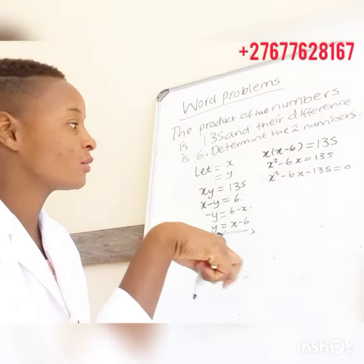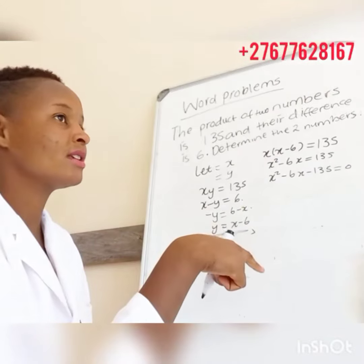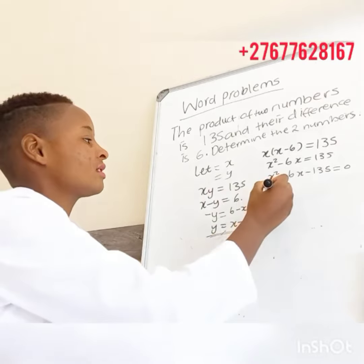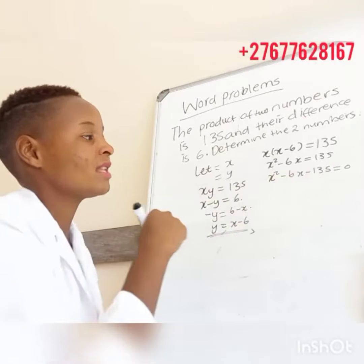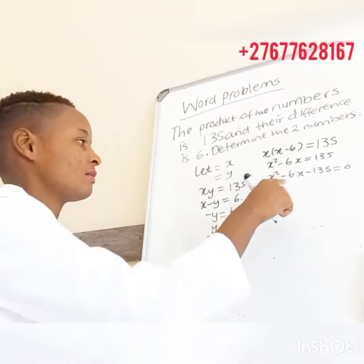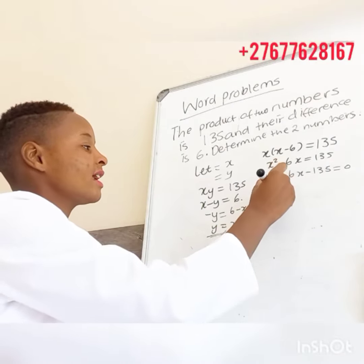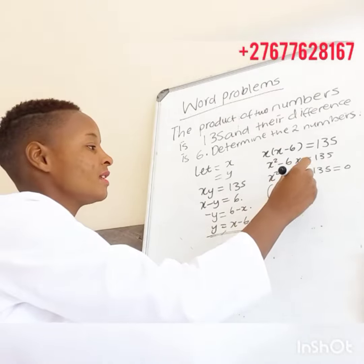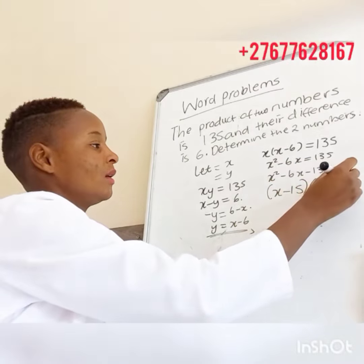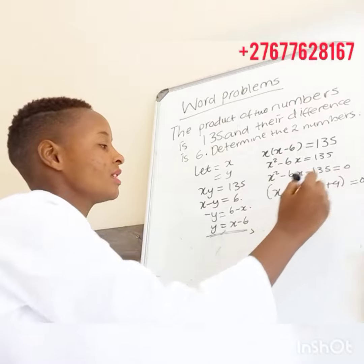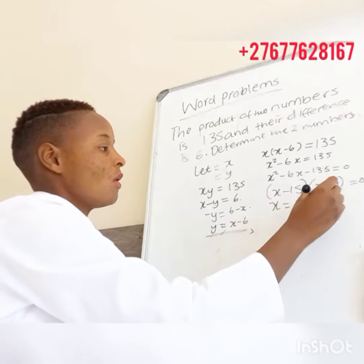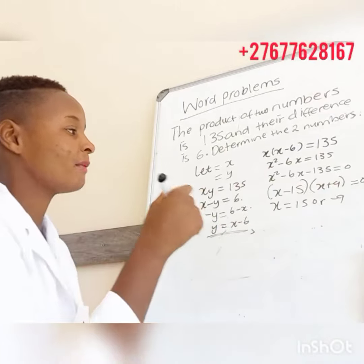Hopefully you guys still remember how to factorize quadratic equations. The coefficient of x squared is 1, so we look for two factors of negative 135 that add to give us negative 6. In this case it's going to be (x minus 15)(x plus 9) equals 0, so our values for x are 15 or negative 9.